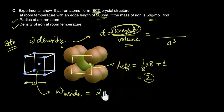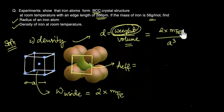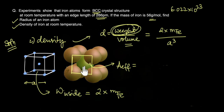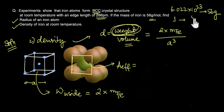The weight inside the unit cell is 2 times the mass of a single iron atom. From the question, the molar mass is 56 grams per mole, meaning 6.022 × 10²³ iron atoms weigh 56 grams. So the mass of a single iron atom is 56 divided by 6.022 × 10²³ grams.